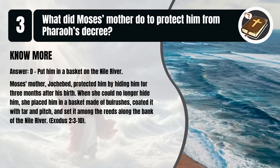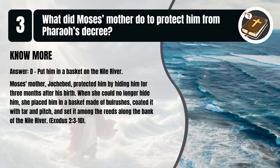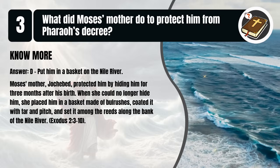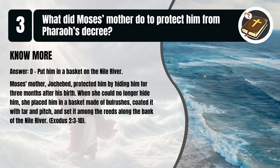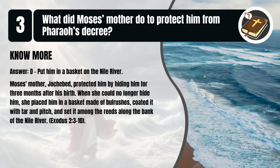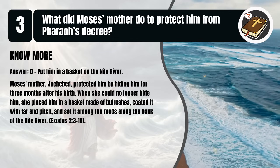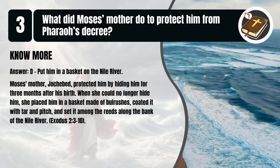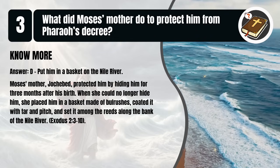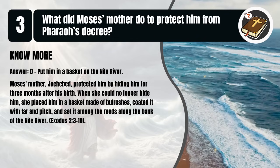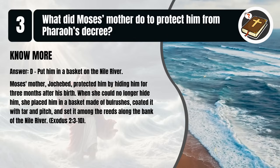That's D. Put him in a basket on the Nile River. Moses' mother, Jochebed, protected him by hiding him for three months after his birth. When she could no longer hide him, she placed him in a basket made of bulrushes, coated it with tar and pitch, and set it among the reeds along the bank of the Nile River. Exodus 2:3-10.